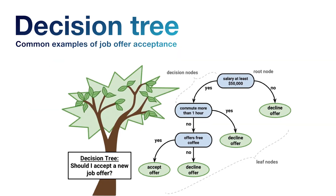A common example is job offer acceptance. Should you accept a new job offer? First, does the salary meet at least fifty thousand dollars? If yes, are you willing to commute for one hour every day? If no to the salary, do they offer free coffee? If yes to the coffee, you accept the offer; if no, you decline.